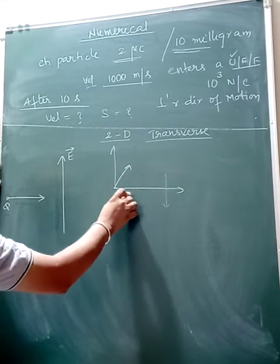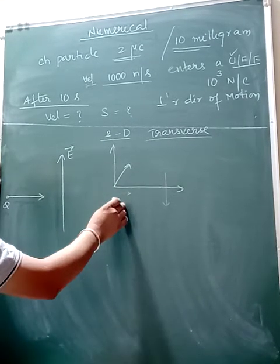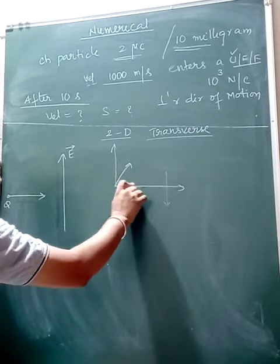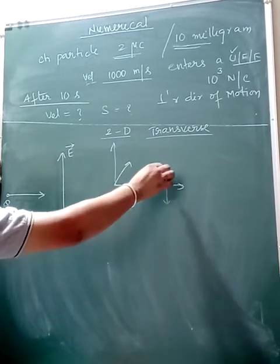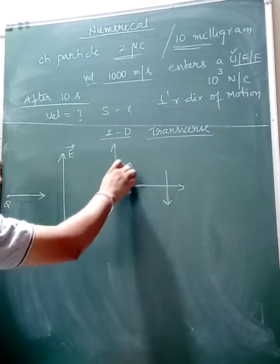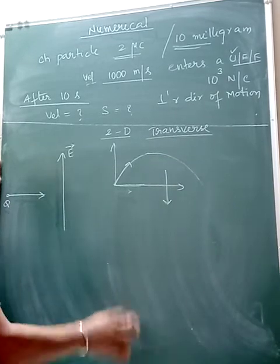There is no acceleration in this direction. As there is no acceleration in this direction, the horizontal component of velocity remains constant. And vertical component of velocity gradually changes. As there is no acceleration, first it becomes zero and then again increases. Similar to this.